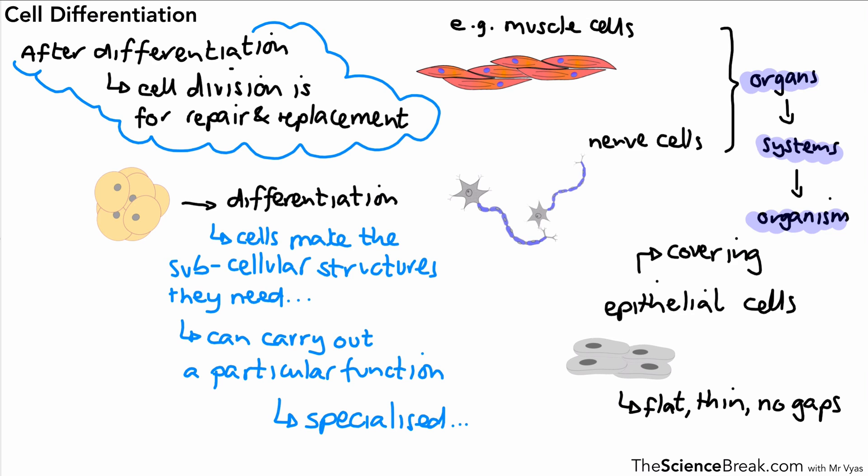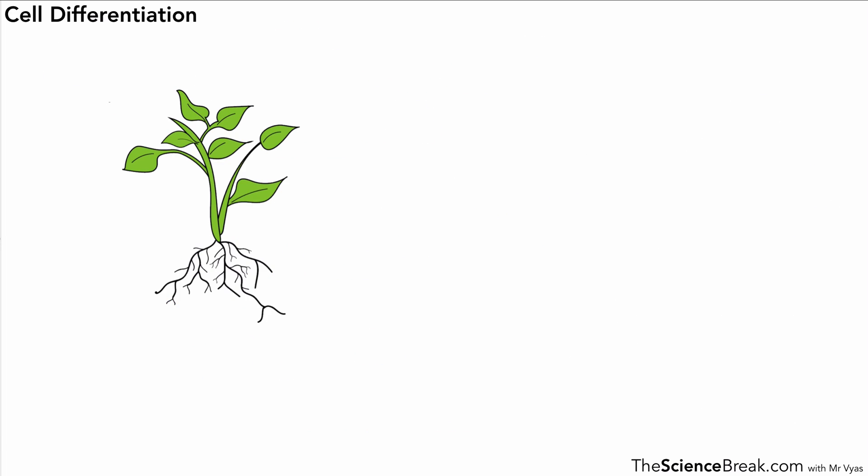The cells lose their ability to differentiate. If we look at another example of a living thing—plants—we can compare how differentiation works in plants compared to animals. Plants do need specialized cells as well, but the difference with plants is that in the adult plant many cells still retain the ability to differentiate.